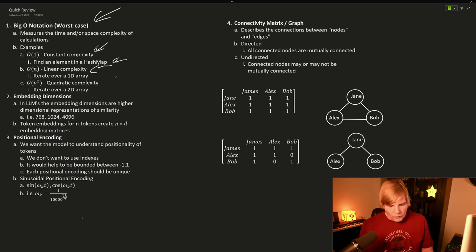And then there's quadratic complexity, such as iterating over a 2D array. If I double the number of elements in quadratic complexity, I have added four times the time or space complexity, and that's what we're going to see with the attention layer.